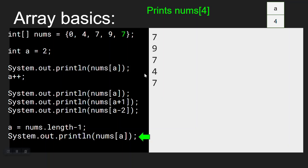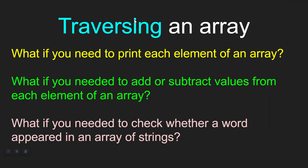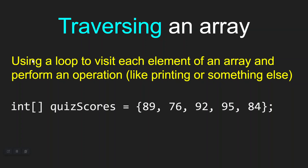Hopefully that made sense. If not, go back and rewatch Lesson 1 from Unit 6 and review those array basics. In this lesson, we are going to learn what it means to traverse an array. Think about some of the challenges you might face — maybe you need to print each element of an array, or perform math operations on each element, or check whether a word appears in an array of strings. For each of these tasks, you would need to do what's called traversing the array. To traverse an array, by definition, is using a loop — usually a for loop — to visit each element and perform an operation like printing, math, or something else.